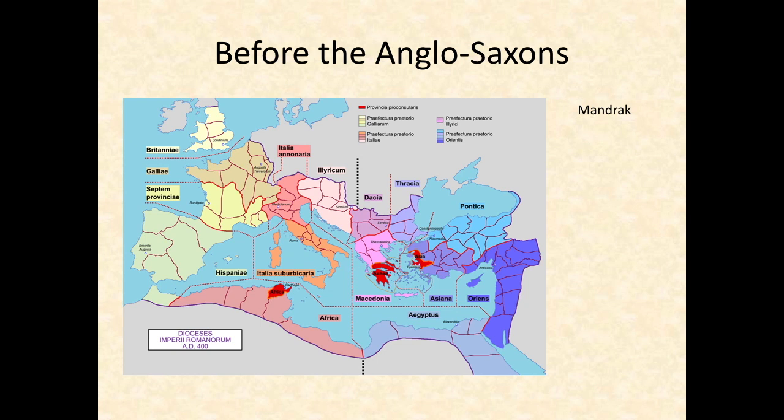The Anglo-Saxon period begins around the fifth century CE — that is, Common Era, equivalent to AD. In the fifth century, the last Roman troops left Britain, and a plea from Britons for more troops went unanswered. Around this time, some Germanic tribespeople migrated from the continent to what we now call England.